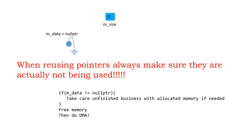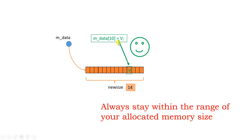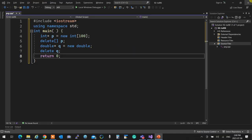When you want to delete something, if the data inside is important, check first that it's not null, do whatever business you need — save it, print it — and then free the memory. You don't need to check for null before deleting since delete handles that automatically. After freeing, you can reallocate with a new size and do what you want, always staying within the limits of your allocation.